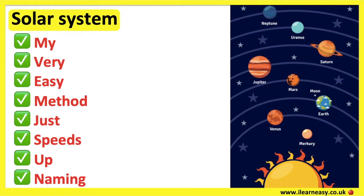An easy way to remember the order of the planets is: My very easy method just speeds up naming. My is for Mercury, V is for Venus, E is for Earth, M is for Mars, J is for Jupiter, S is for Saturn, U is for Uranus, and N is for Neptune.